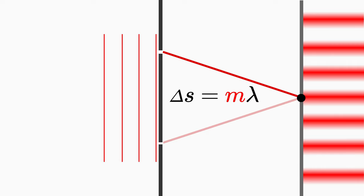For delta s equals zero, obviously m must be zero. This is where the term zero order maximum comes from.